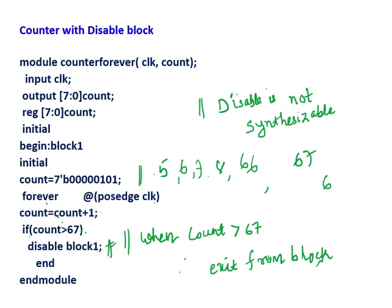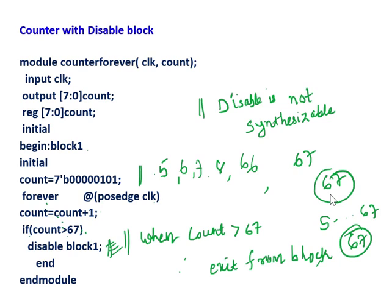Once count is 67, then when it is greater than 67 - when count becomes 68 - disable block 1 is activated and this block will be disabled. Inside this block forever is there, so forever won't run again. The block runs from begin colon block1 to end. So once this statement - count greater than 67 - means 68, then disable block1 is executed and this block will be exited. Then next is end module.